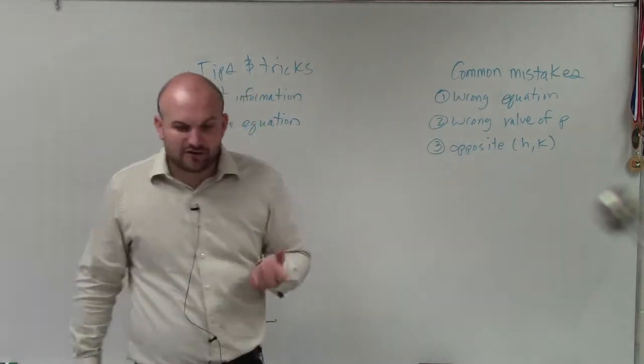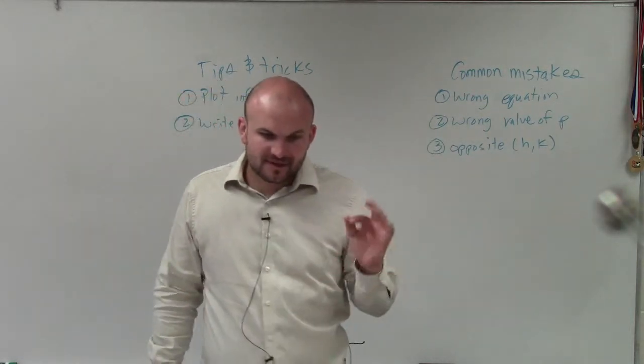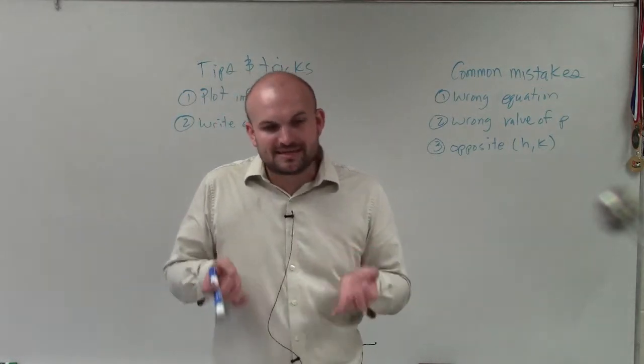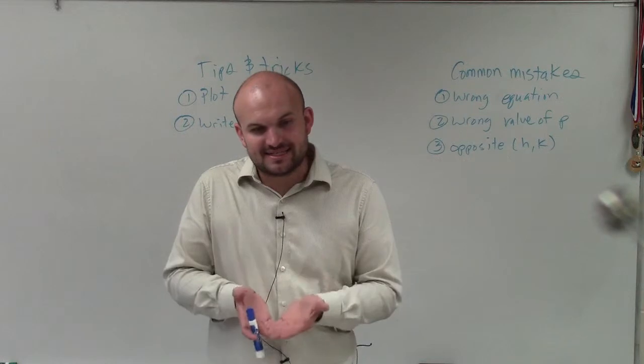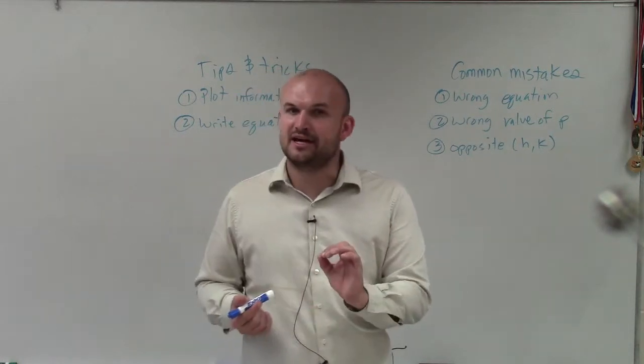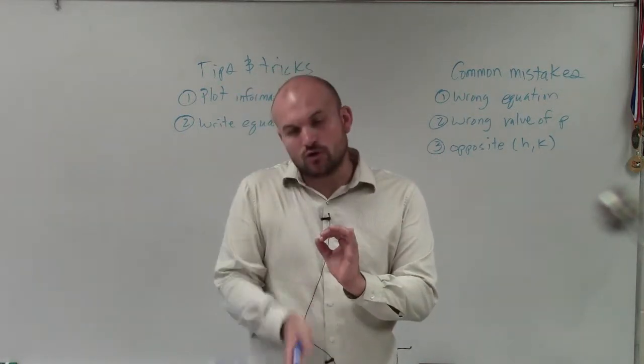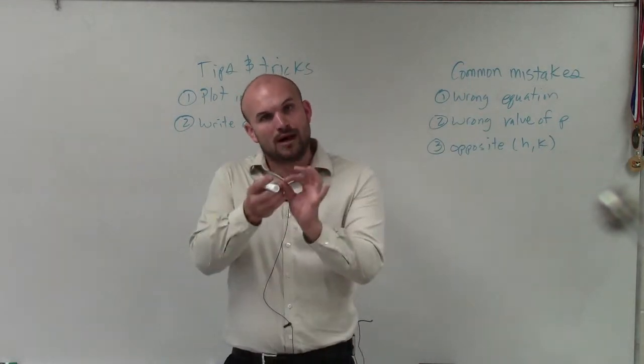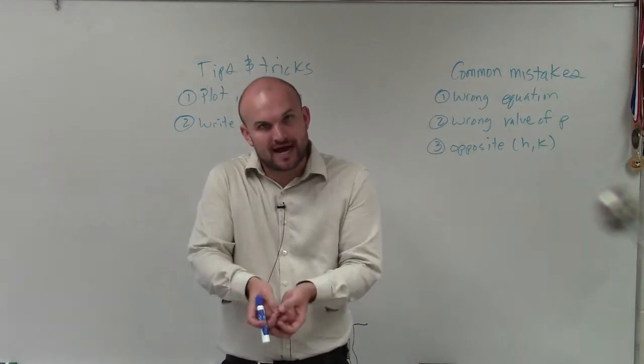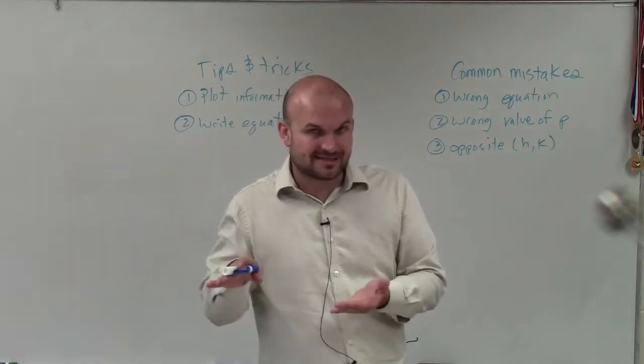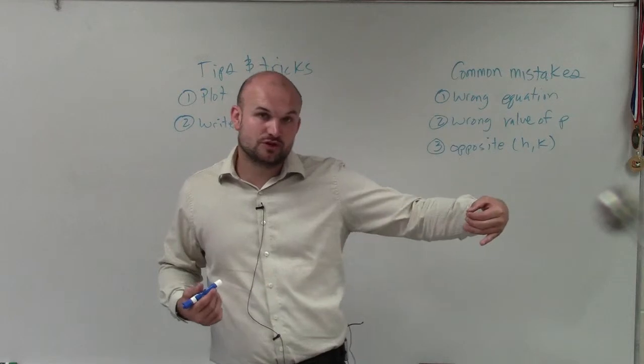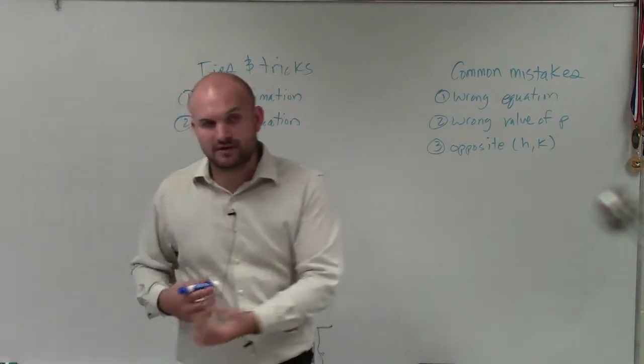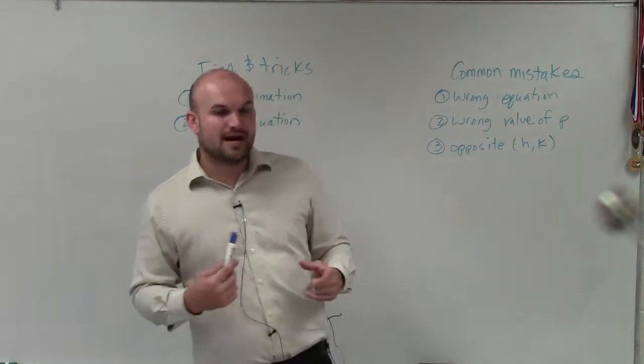Next thing is determining the value of p. This one gets confusing sometimes, students. Remember, when p is positive, that means the distance from - if you have your vertex at the center and you have a vertical axis of symmetry, if p is positive, then you're going to go up. If p is negative, you go down. If you have a horizontal axis of symmetry and p is positive, you're going to move to the right to find the focus. And if it's negative, you move to the left to find the focus. The reason where students get mixed up is remember,